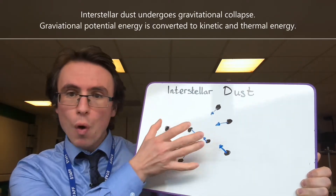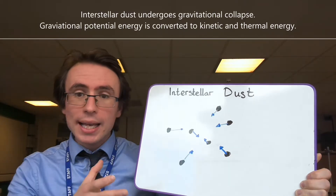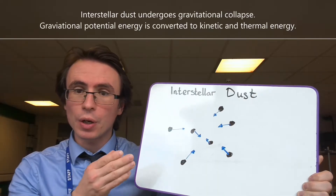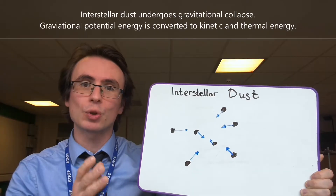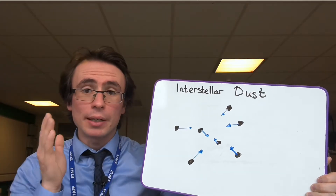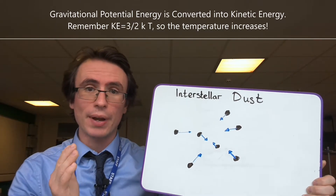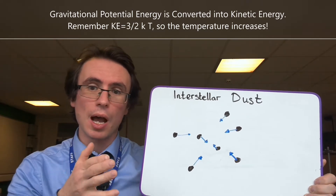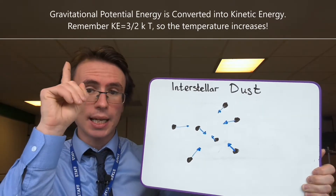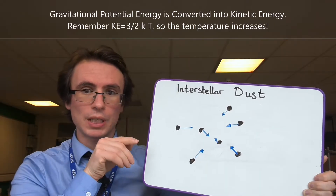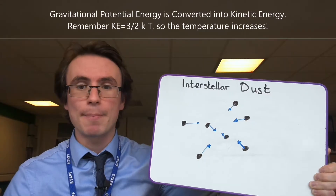They will be drawn together to the center of gravity. As the gravitational collapse occurs, gravitational potential energy is being directly converted to kinetic energy. The kinetic energy of a particle is proportional to its temperature — in fact, the kinetic energy is equal to three halves times Boltzmann's constant times the temperature. So as that kinetic energy rises, so does the temperature.